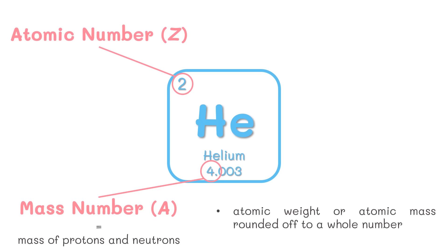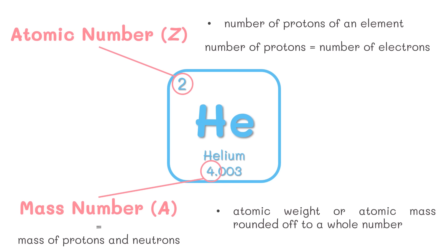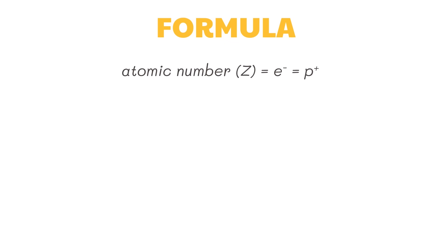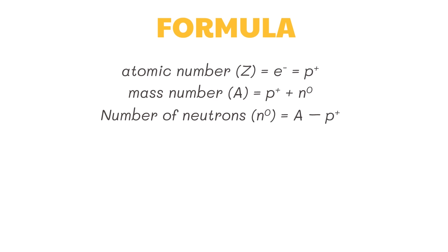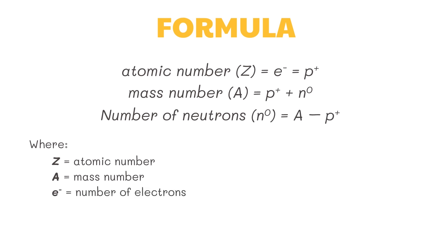The atomic number is the number of protons of an element and can be used to identify the atom. An element is a neutral atom and therefore has an equal number of protons and electrons. The following formulas help determine subatomic particle counts: atomic number (Z) equals number of electrons equals number of protons; mass number (A) equals number of protons plus number of neutrons; number of neutrons equals mass number minus number of protons. Here, Z is atomic number, A is mass number, e⁻ is electrons, p⁺ is protons, and n⁰ is neutrons.